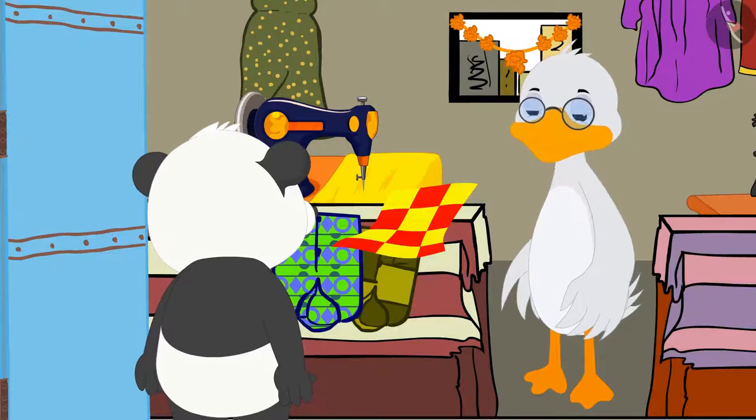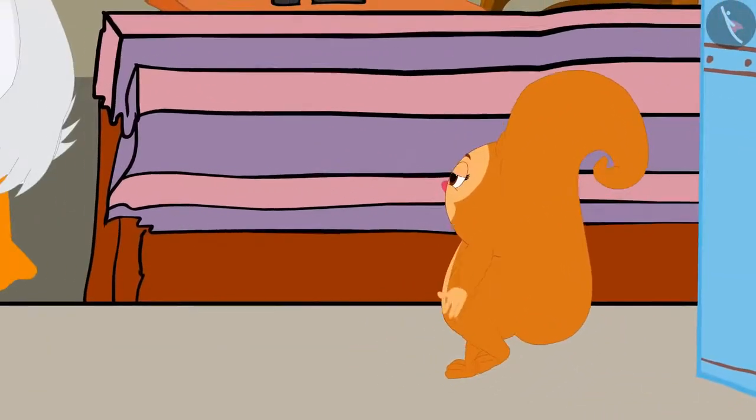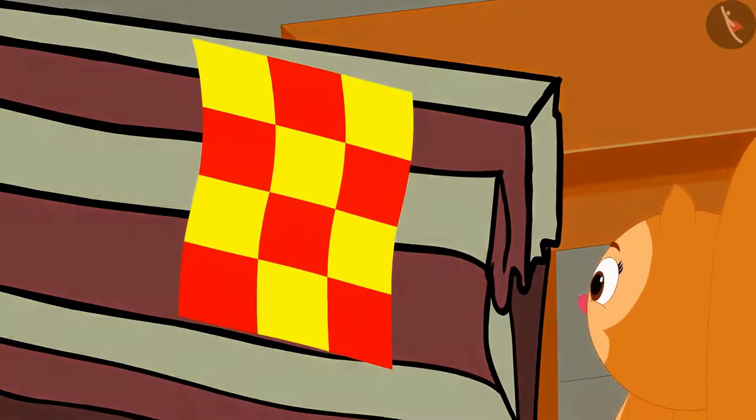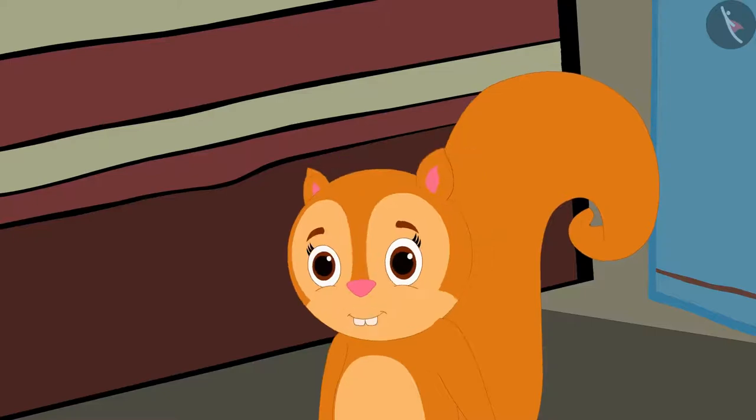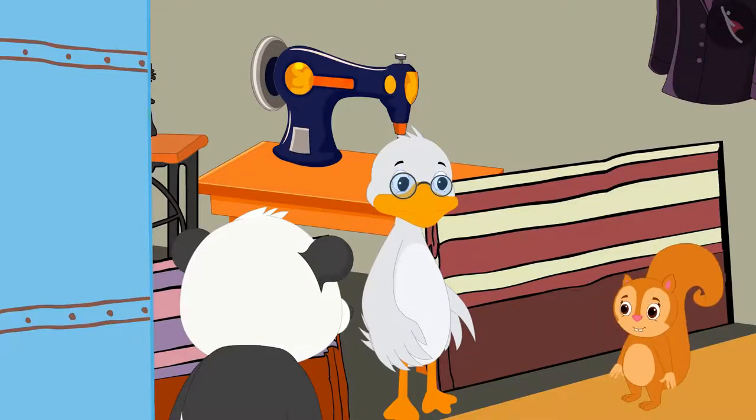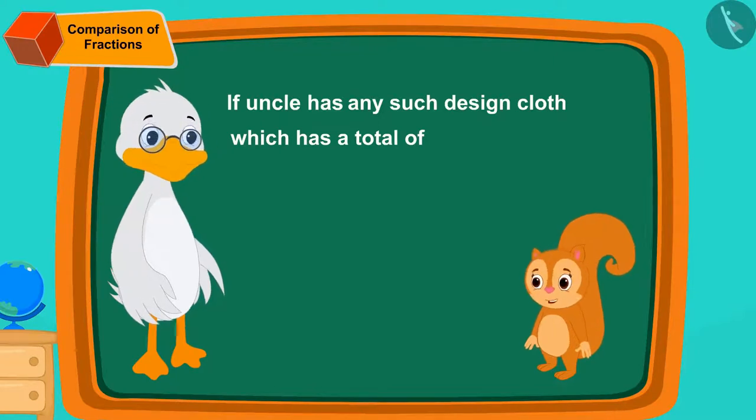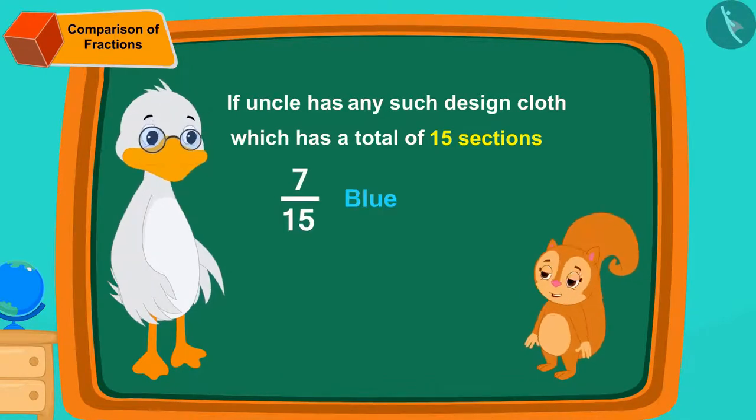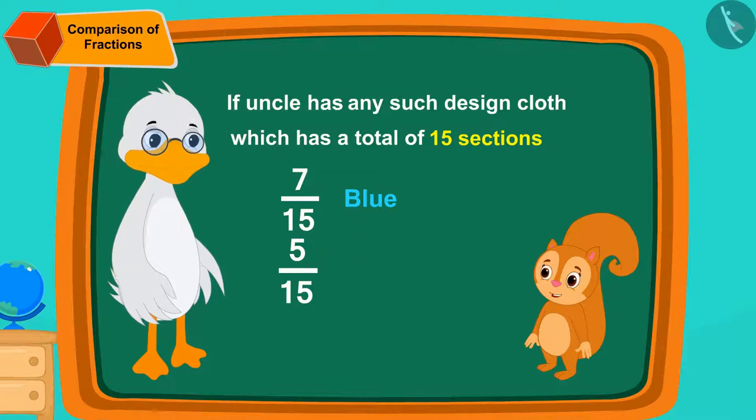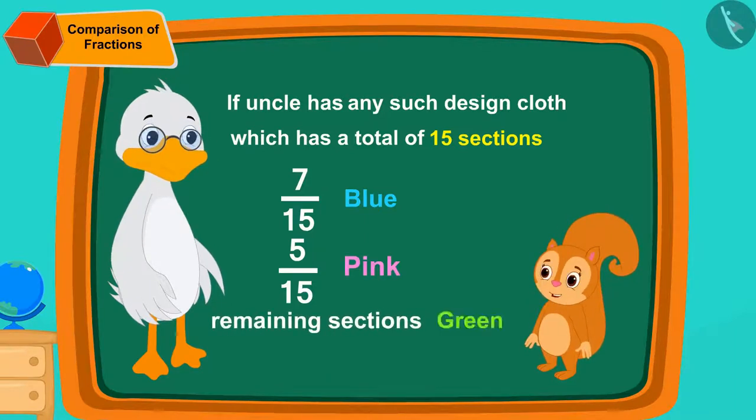While Golu was standing at Uncle's shop, Chanda came there. She saw the design made on Golu's cloth and liked it very much. Now she's asking Uncle if he has any such design cloth which has a total of 15 sections. Of them, 7/15 should be blue, 5/15 pink, and the remaining sections should be green.